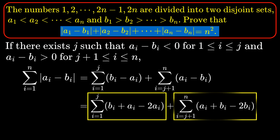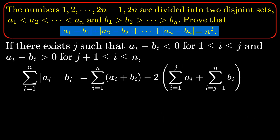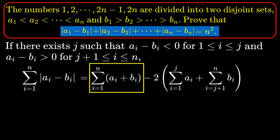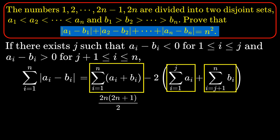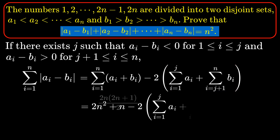and the second sum from j+1 to n of (a_i - b_i). Now I'm going to use the fact that we know the sum of all numbers a1 to an and b1 to bn, which is the sum of the integers 1 to 2n, because those are the numbers given to us. We can rewrite the two sums as (b_i + a_i - 2a_i) for the first sum and (a_i + b_i - 2b_i) for the second sum.